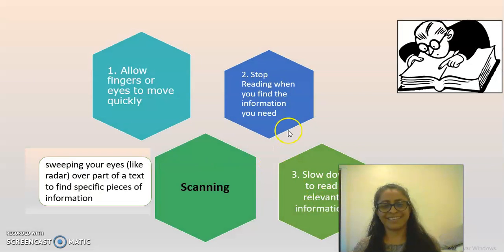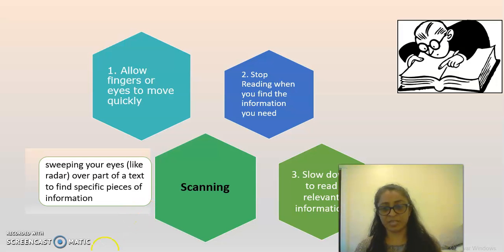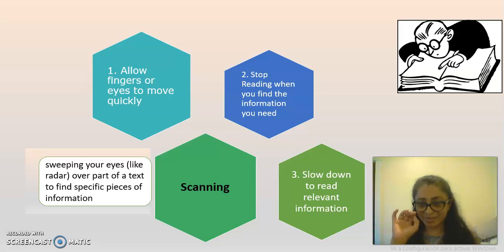Next is scanning. What scanning involves is sweeping your eyes like a radar over part of the text to find specific pieces of information. Now we're looking for specific pieces of information. In skimming, we were just trying to get an idea of what the reading was going to be about. You can use your fingers to guide your eyes through the text.